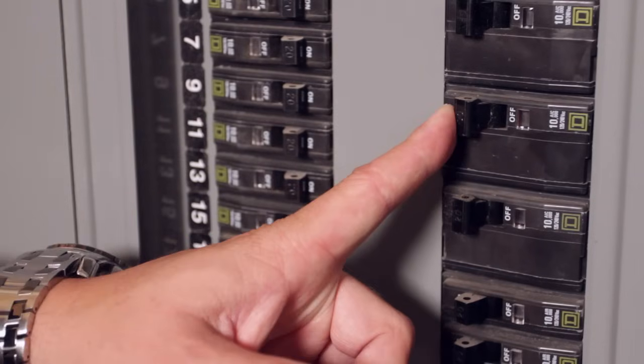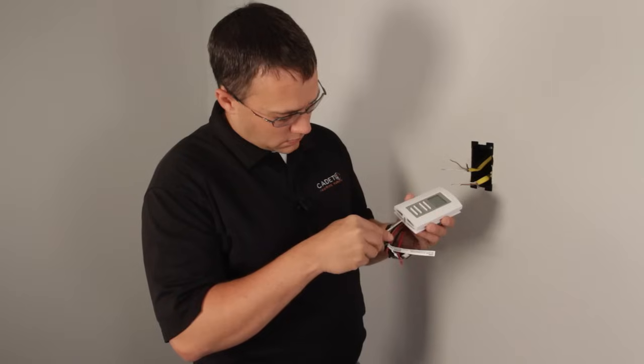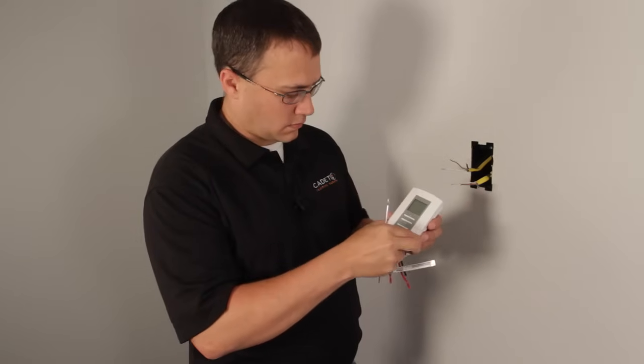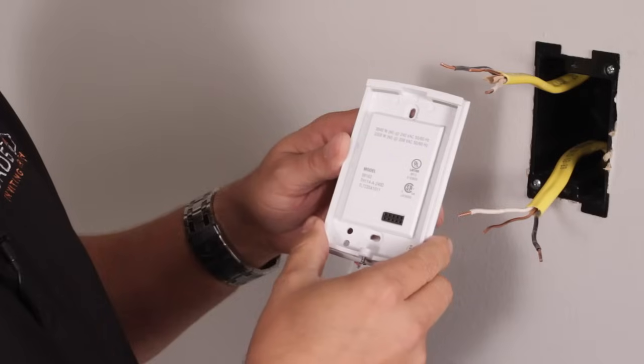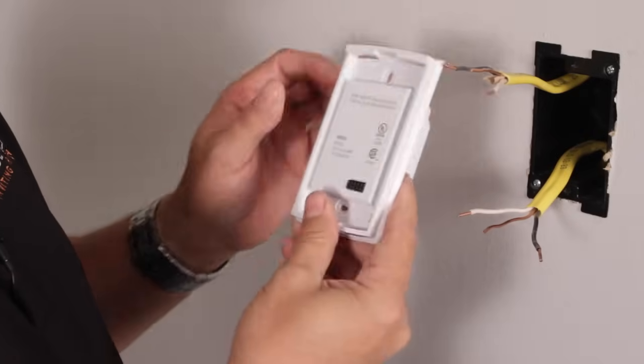Before you do anything else, you're going to want to turn your breaker off. First, unscrew the set screw and disconnect the thermostat from the sub base. Flip it over, and now we're going to look at the back.